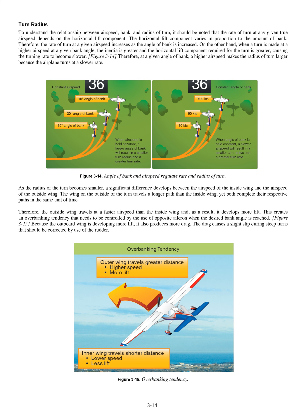To understand the relationship between airspeed, bank, and radius of turn: the rate of turn at any given true airspeed depends on the horizontal lift component. The horizontal lift component varies in proportion to the amount of bank. Therefore, the rate of turn at a given airspeed increases as the angle of bank is increased. On the other hand, when a turn is made at a higher airspeed at a given bank angle, the inertia is greater and the horizontal lift component required for the turn is greater, causing the turning rate to become slower. Therefore, at a given angle of bank, a higher airspeed makes the radius of turn larger because the airplane turns at a slower rate.